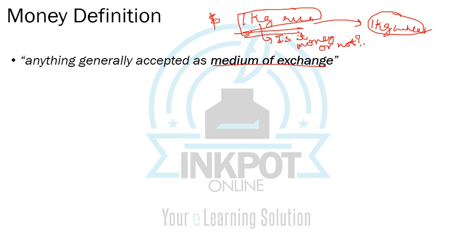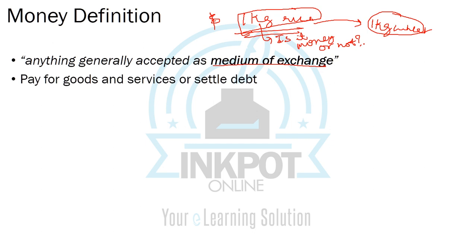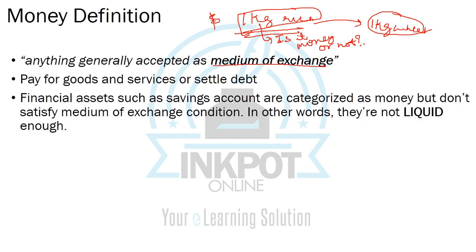To answer whether rice qualifies as money, we must first look at the functions of money, which we'll see in the following slides. But for now, let's focus on this definition: money is basically anything we can use to pay for goods and services, or to settle debt.